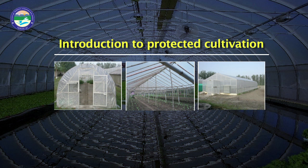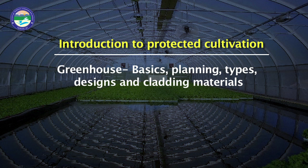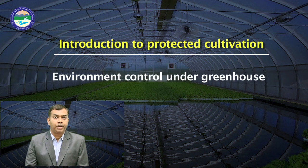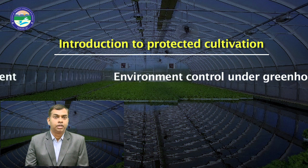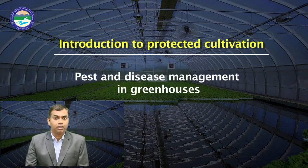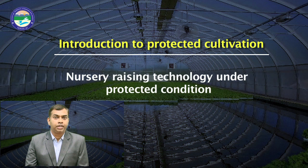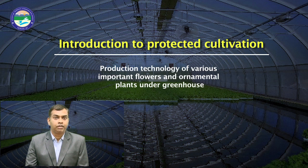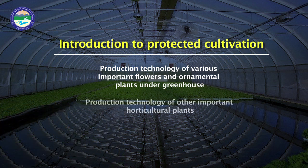The course content includes: an introduction to protective cultivation; greenhouse basics, planning, types, designs and cladding material; low-cost protective cultivation technologies; techniques for environment control under greenhouse; irrigation and fertigation management; pest and disease management in the greenhouse; nursery raising technology under protected conditions; and production technology of various important vegetables, flowers, ornamental plants and other horticulture crops under greenhouse. Soil-less culture will also be elaborated. Hope to see you in this course very soon.